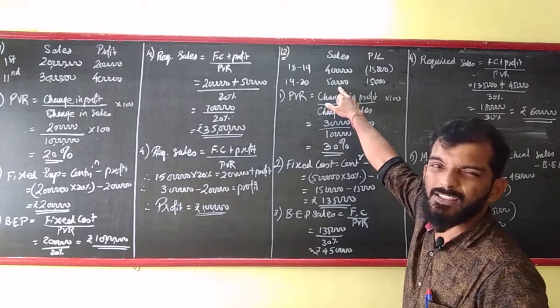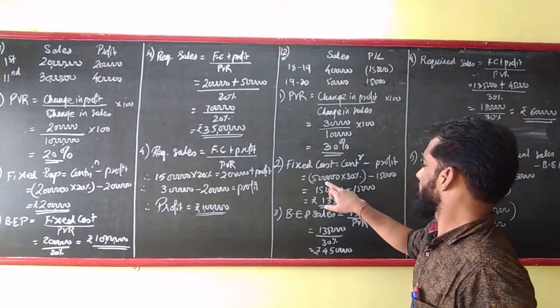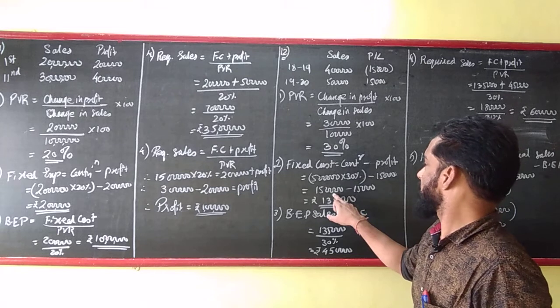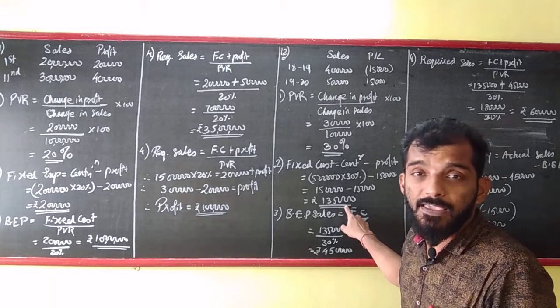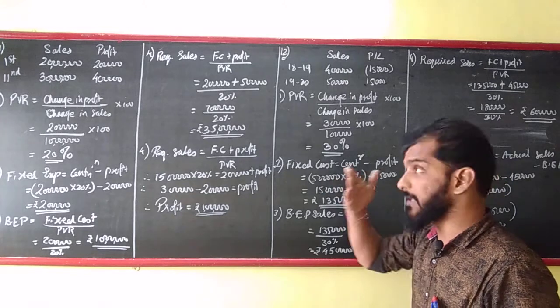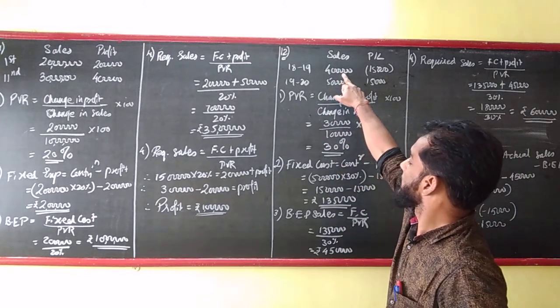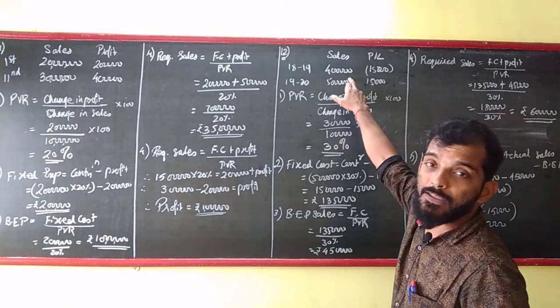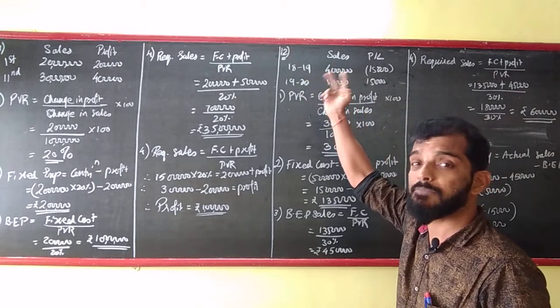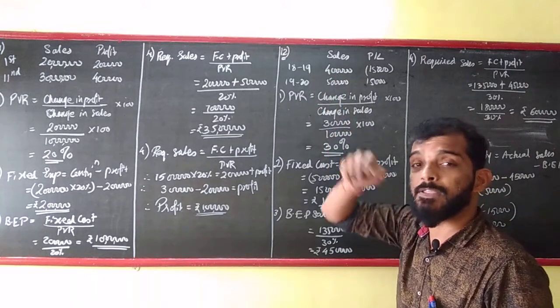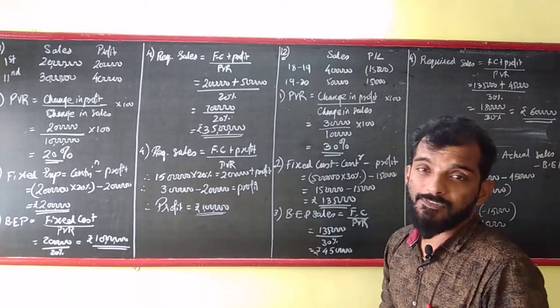In sales, first year is 5 lakhs, 5 lakhs into 30% that is 1 lakh 50, minus profit minus 15,000, 135. We can verify: 4 lakhs into 30%, 120, 120 minus loss, minus minus, 120 plus 15, which is 135.